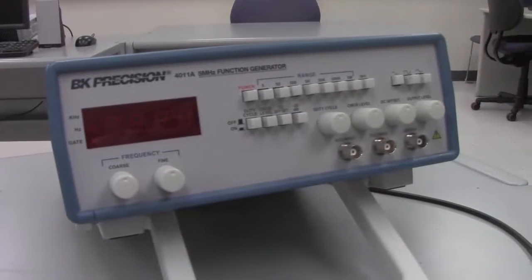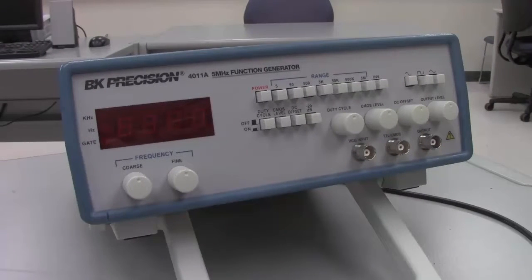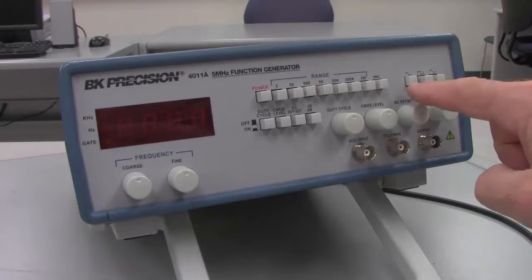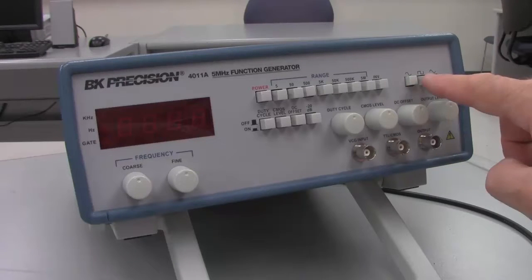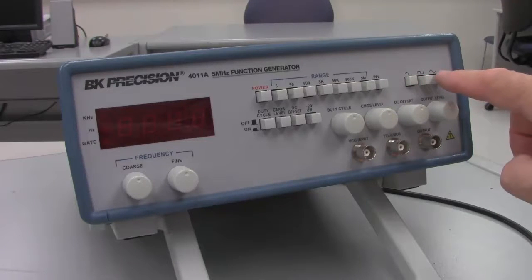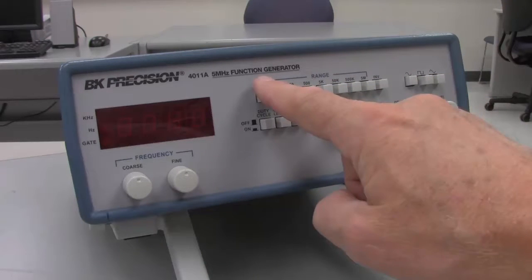The oscilloscope is designed to display variable voltages or time-varying voltages, and so we're also going to be using a function generator. The function generator we're going to be using is able to produce sine wave, square wave, and triangular-shaped waves at a number of different frequencies.